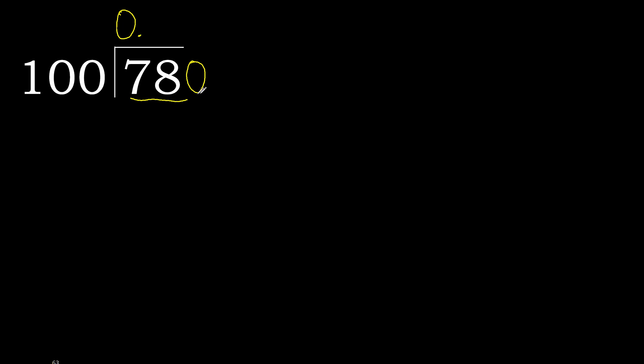780 is not less, therefore work with 780. 100 multiplied by which number is nearest to 780 but not greater? 100 multiplied by 8 is 800 — 800 is greater. 100 multiplied by 7 is 700 — 700 is not greater.